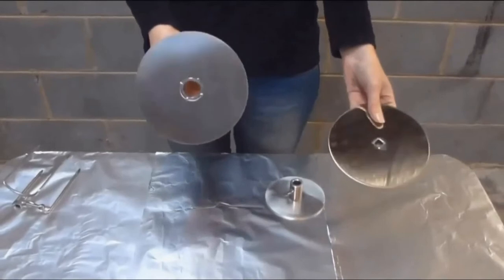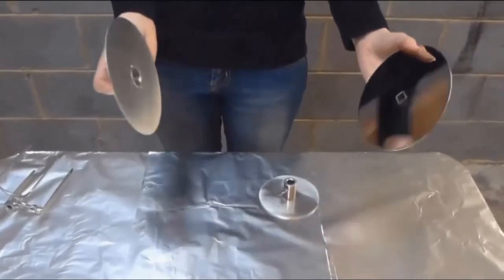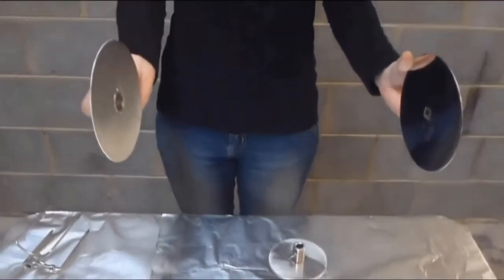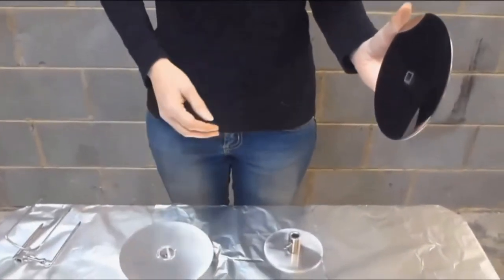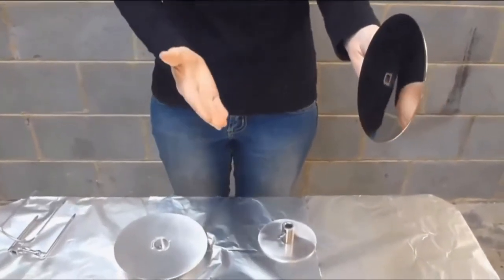Now the purpose of these discs is that when you're cooking you can actually wedge the meat in between two discs, and the purpose of that is because the gyros style meat is designed to be carved throughout the cooking process.